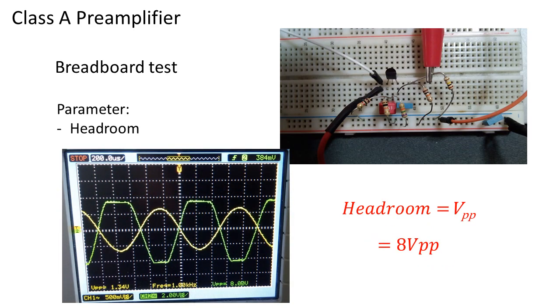The headroom is verified by overdriving the input of the amplifier and measuring the peak to peak voltage. This is about 8 volts, just like the simulation.